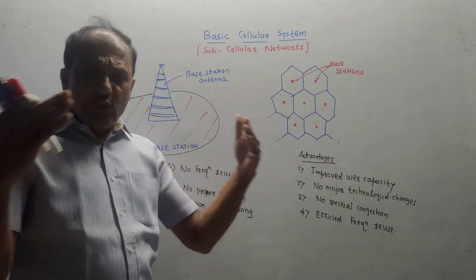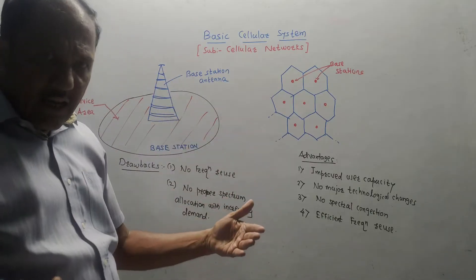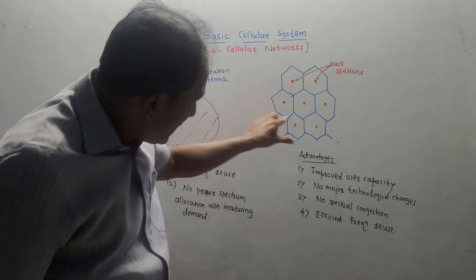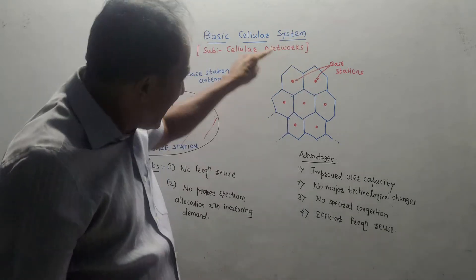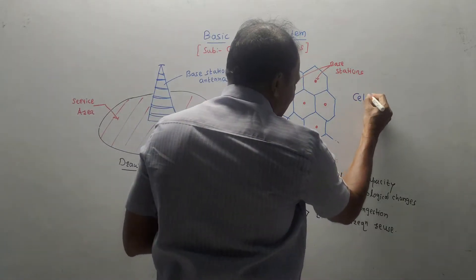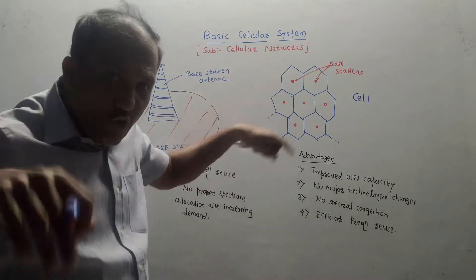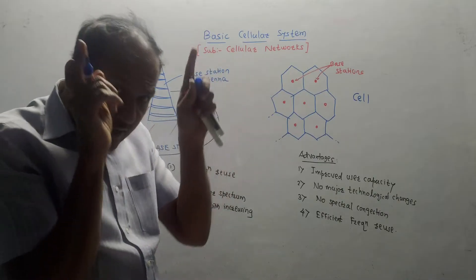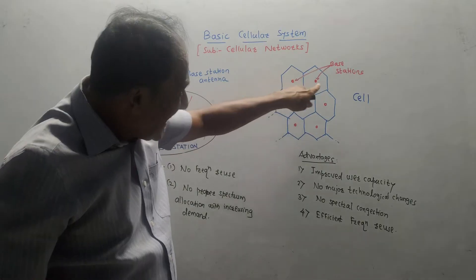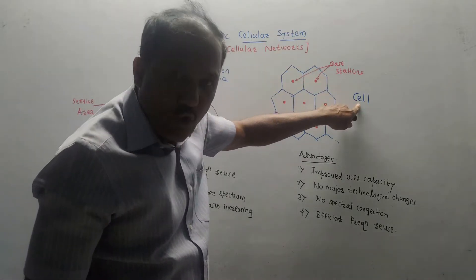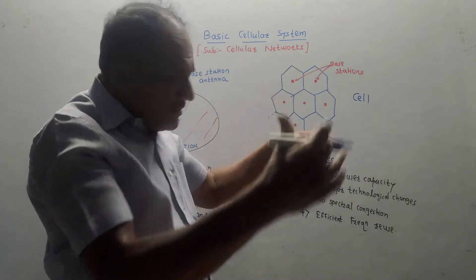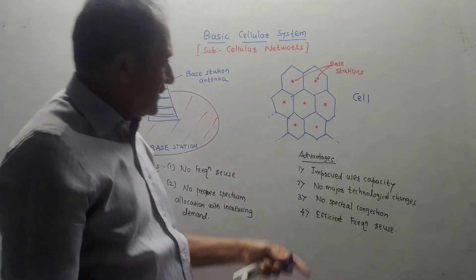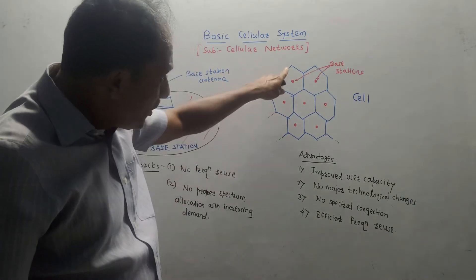Nowadays we know that we can use any mobile of any manufacturer and that mobile will work in any area. Instead of a single antenna covering a large area, some hexagonal type structures are used. Each hexagonal structure is called a cell, and each cell covers a small geographical area. One city is divided into different smaller portions, and for every small portion one hexagonal cell structure is used. At the center — or at the edge — of each cell, a base station is used, which is responsible for transmitting signals to the mobile users.